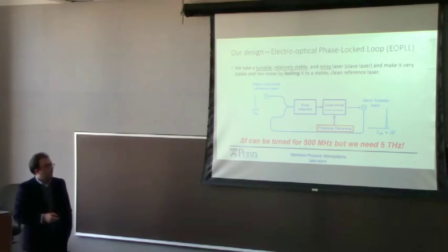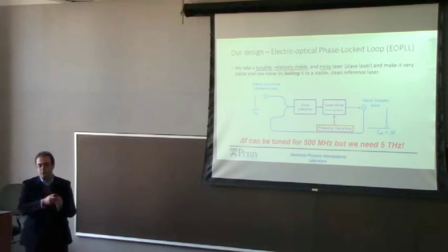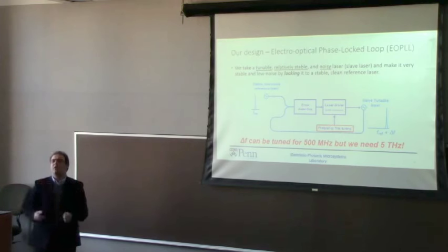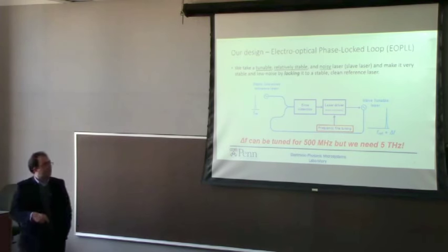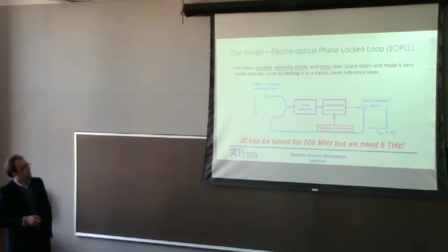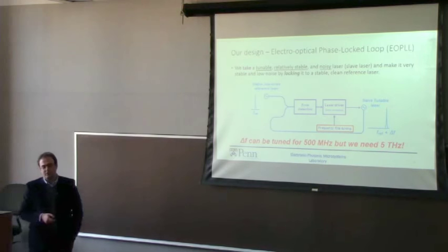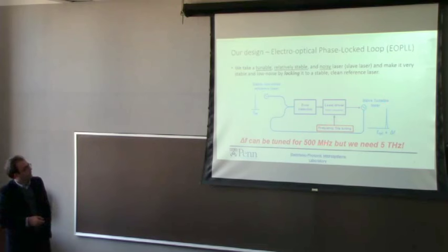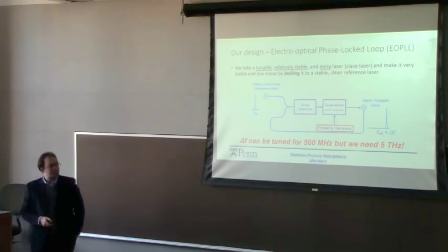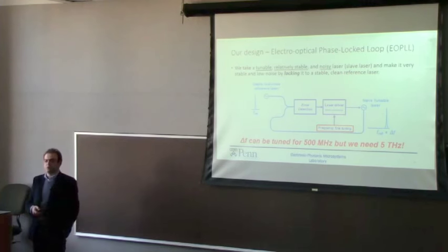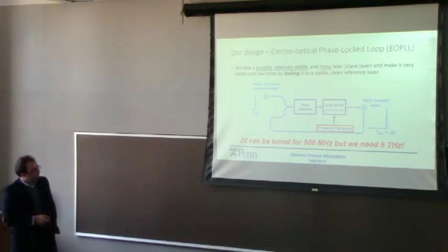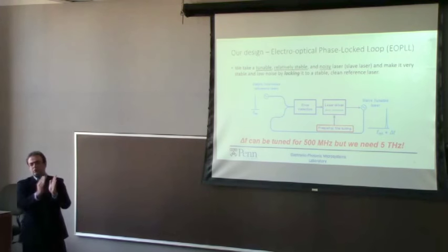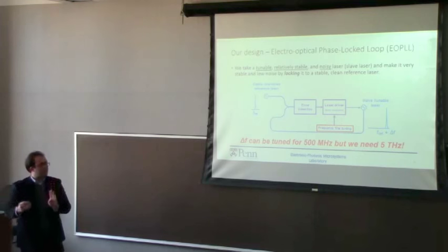But there is a problem. Depending on the application, we may want to move the wavelength of the laser over a specified range — it could be megahertz, gigahertz, or terahertz. In our specific project, we are looking for a tunable laser that you can tune for 5 terahertz, which is 5×10^12 Hz. But using this architecture, you can only tune it for about 500 megahertz. So there is a factor of 10,000 — four orders of magnitude difference. What can solve this problem? For 500 megahertz we are okay, but beyond that, we cannot do it with this architecture.